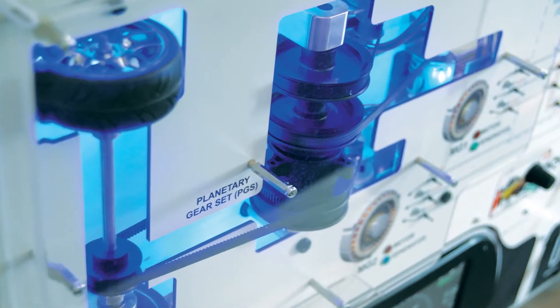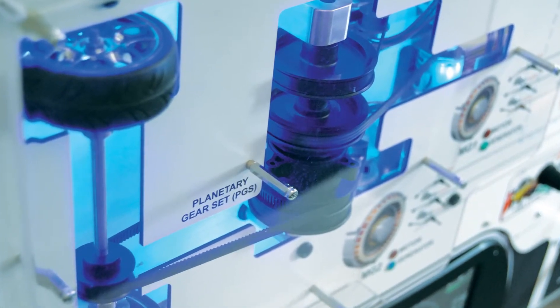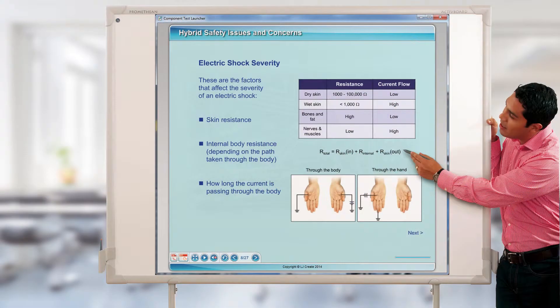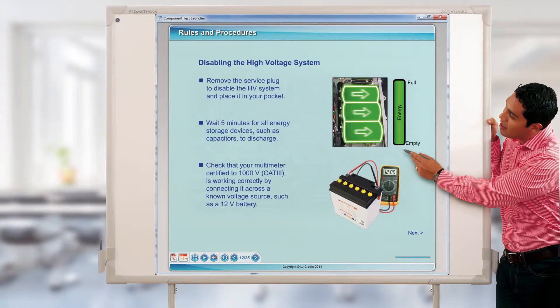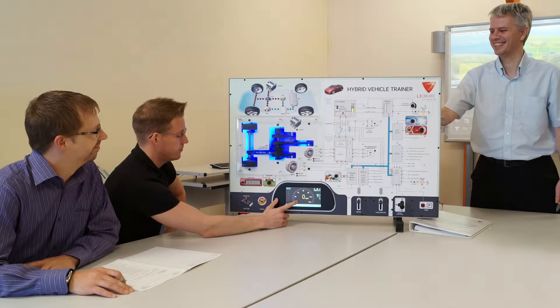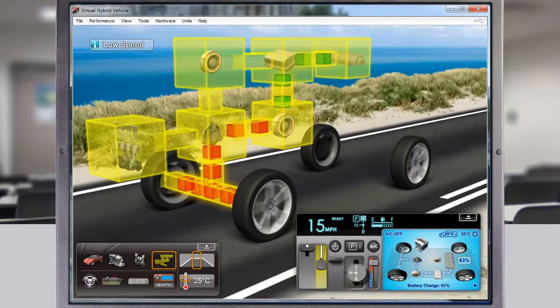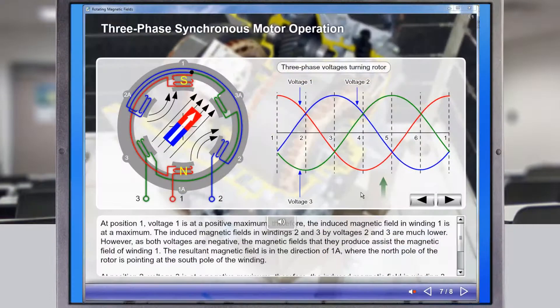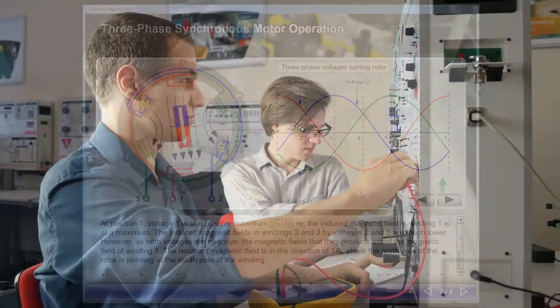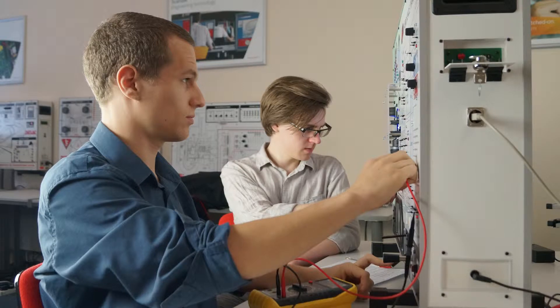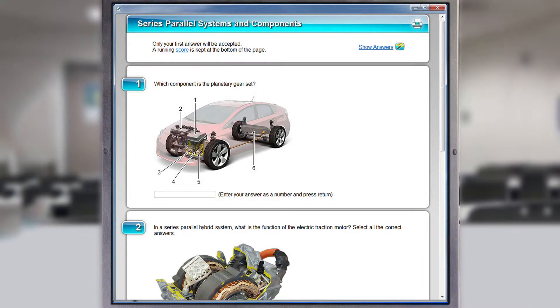Typical lesson sequences might include any of the following activities: Teacher Presentations, Group Demonstrations, Student Simulated Investigations, Group Practical Tasks, System Fault Finding Activities, and Assessment Tests.